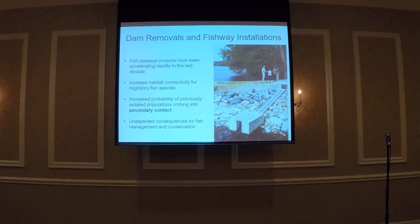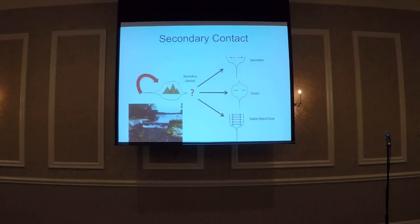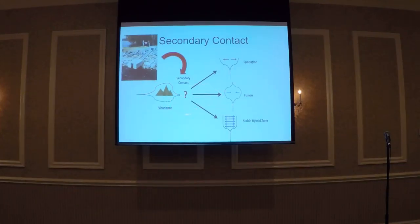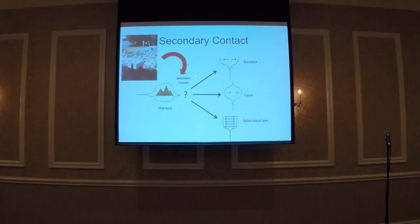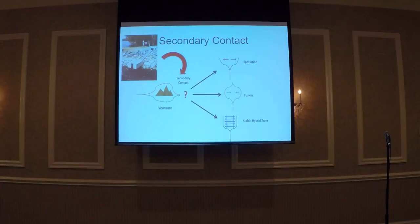Secondary contact can have some really complex ecological and evolutionary consequences for fish populations. It occurs when a population is divided — in our case, a dam splitting up a fish population. Each population experiences different selection pressures, may evolve, become very divergent. When those populations come back together, depending on the degree of divergence, you can get speciation, fusion due to gene flow, or the development of a hybrid zone. This may be relevant depending on your management goals for a given population.